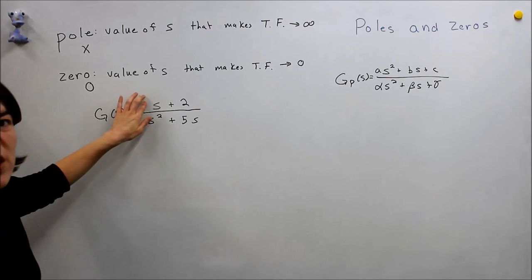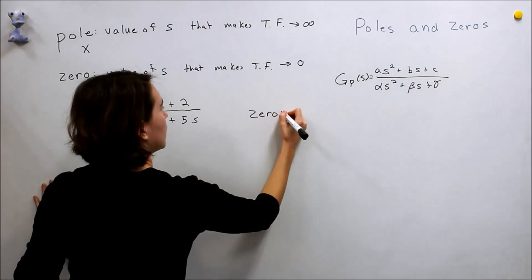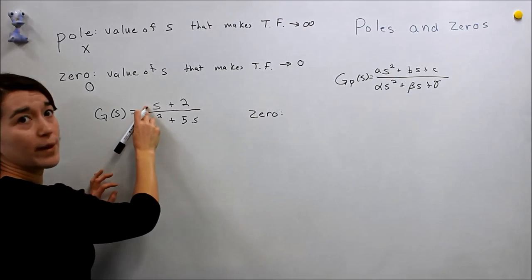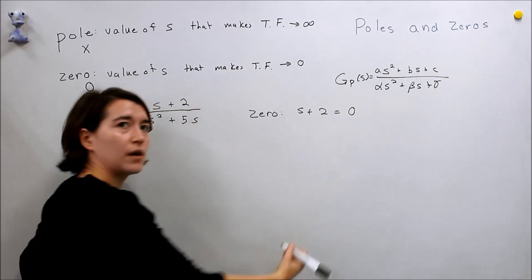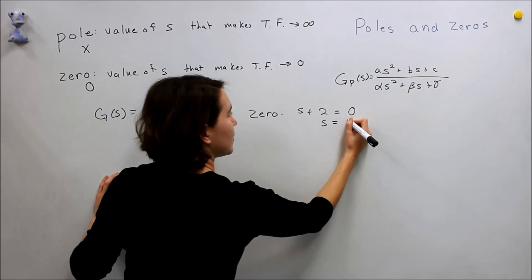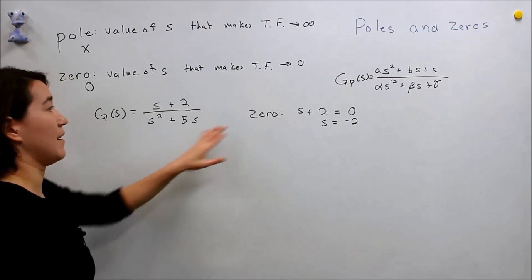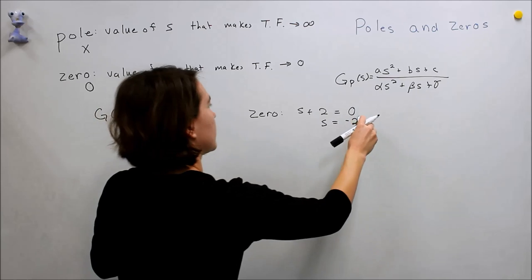So first, let's find the zeros first. So the zeros is going to be whatever makes this zero. So s + 2 = 0. Relatively easy, we can see that s = -2 is a zero. So this would be our answer for the zero.